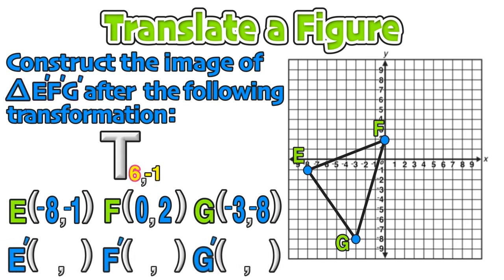We'll start by applying the values of the translation. The x value is six, so we're going to add six to all of the x values in each coordinate. Positive six calls for us to slide six units to the right, horizontally along the x-axis.